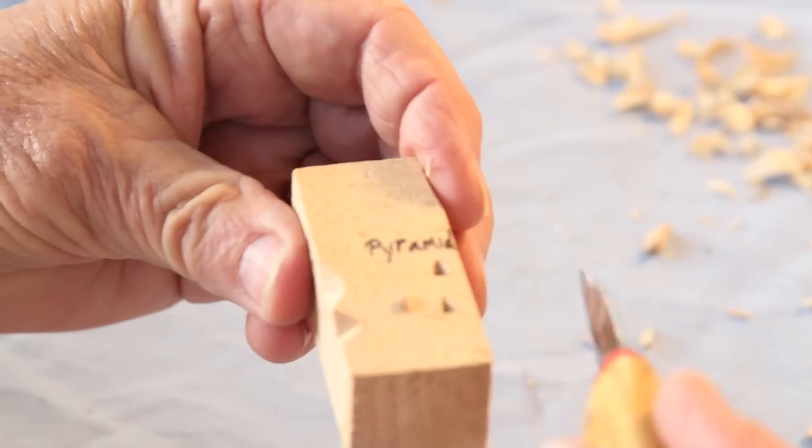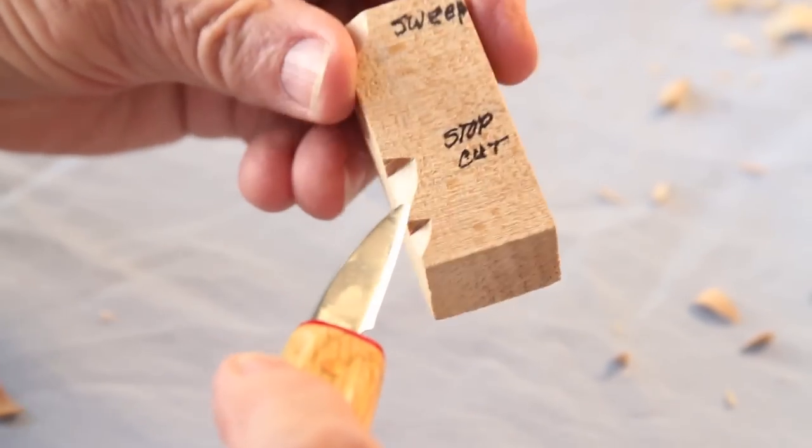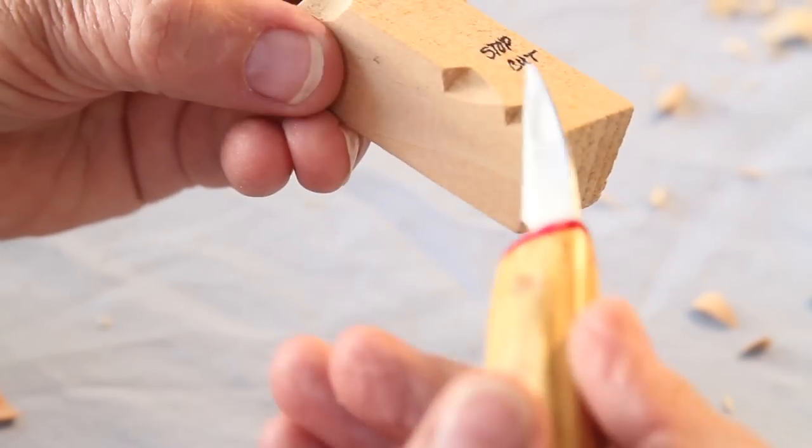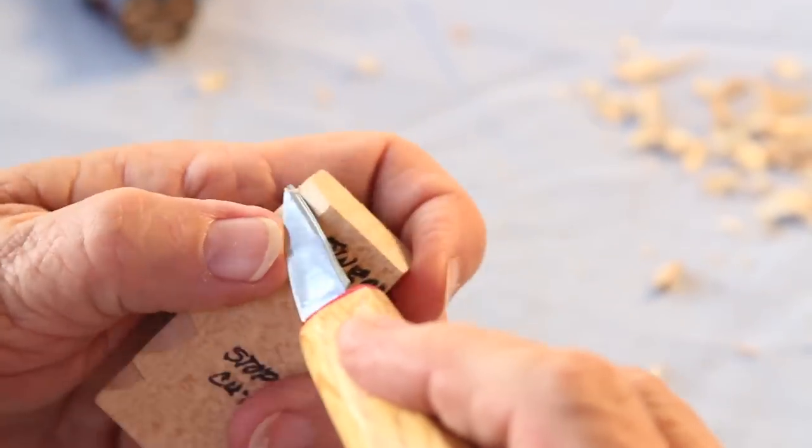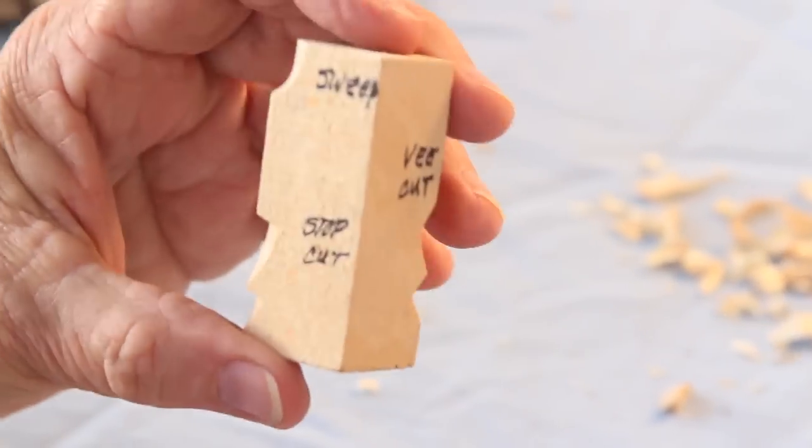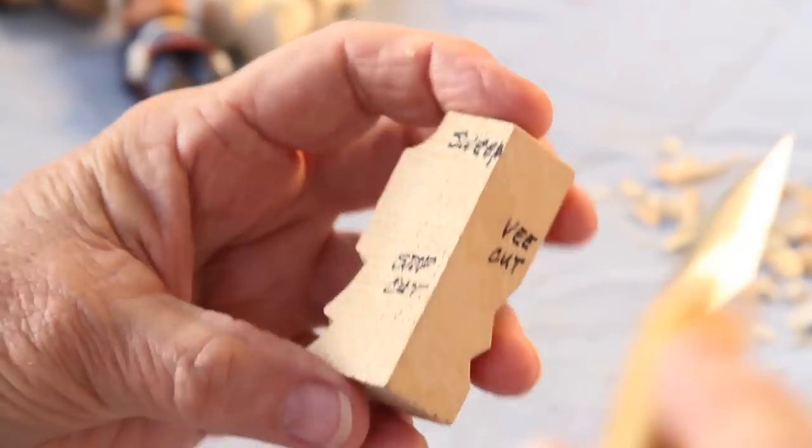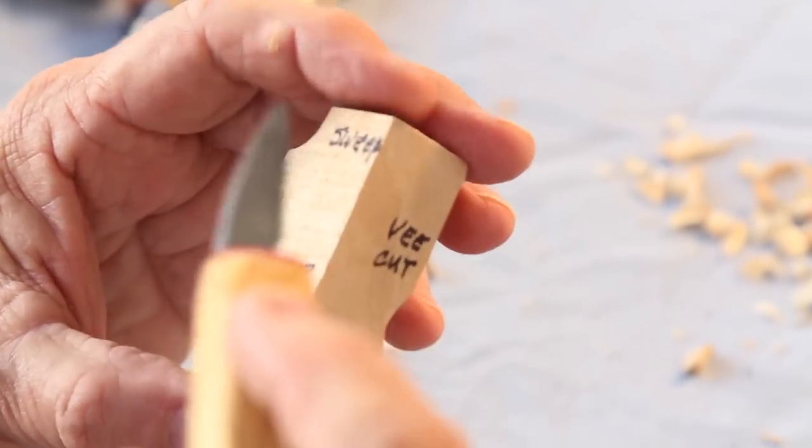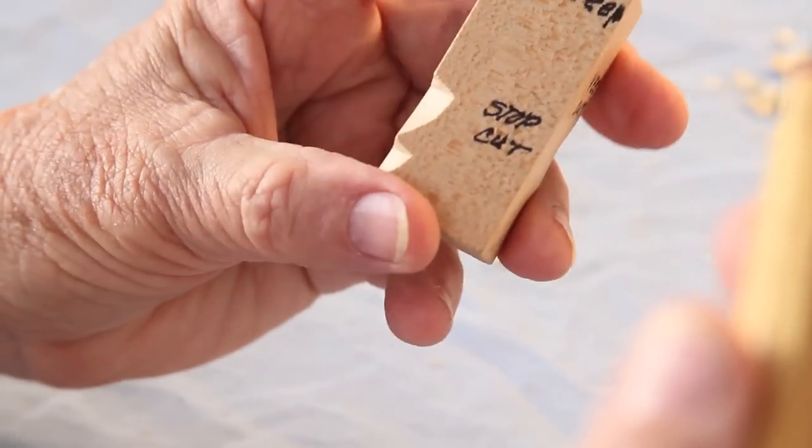So you've learned the pyramid cut, the V cut which is a pretty open cut, the stop cut cutting straight in and coming up to it, and the sweeping cut. Those are probably the four most important cuts that you should practice. Just get a little piece of wood like this and practice on it. So when you go to your little person and you make a mistake, you haven't already practiced. And the nose comes off.